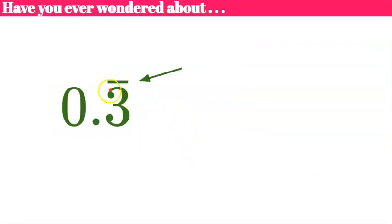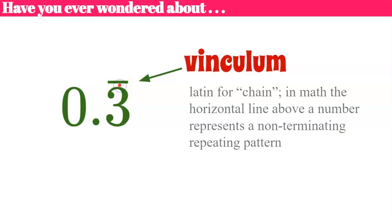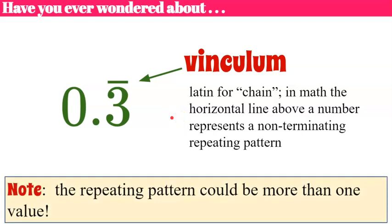The repeating bar above a decimal is called a vinculum — Latin for 'chain.' In math, this horizontal line above a number represents a non-terminating repeating pattern, showing that the digit or digits repeat infinitely. The repeating pattern could be more than one digit — such as 0.323232 — and the vinculum would appear above all the digits that repeat.